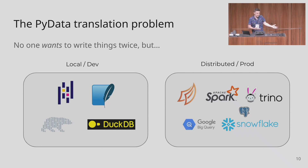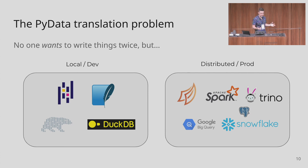This pattern shows up especially in enterprise environments where someone hands you data and says do your job, and you only have pandas or Python lists. You still need to iterate quickly, but operating locally creates a translation problem when you need to turn your local work into a production thing — going from pandas to PySpark, SQLite to Trino, DuckDB to Snowflake. Things are just different locally than they are in production.